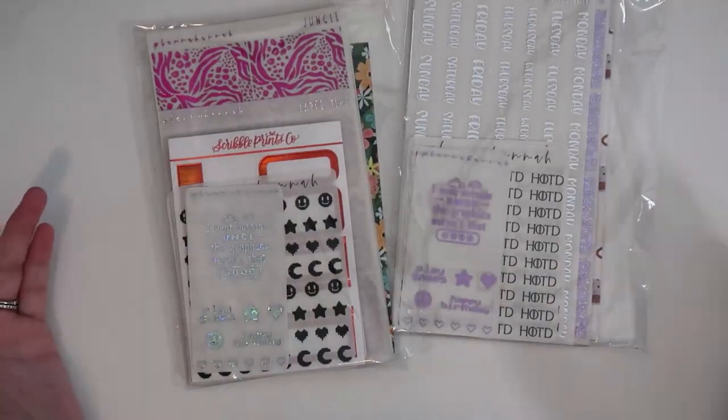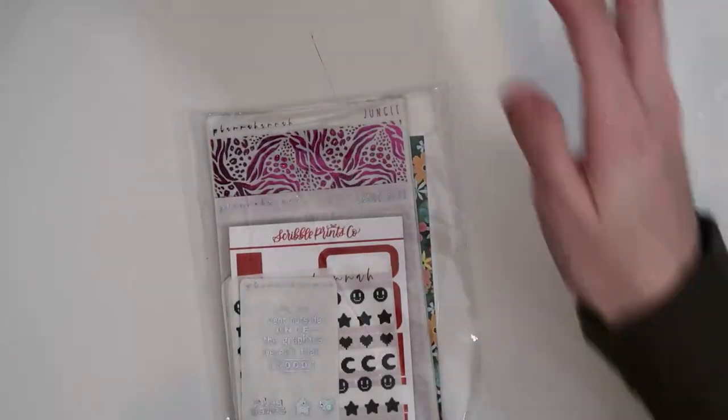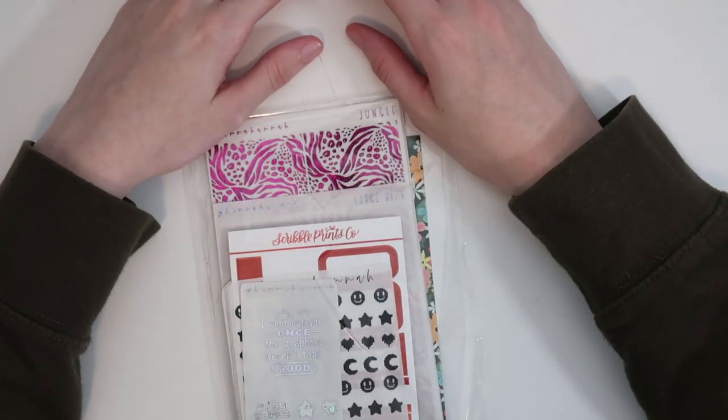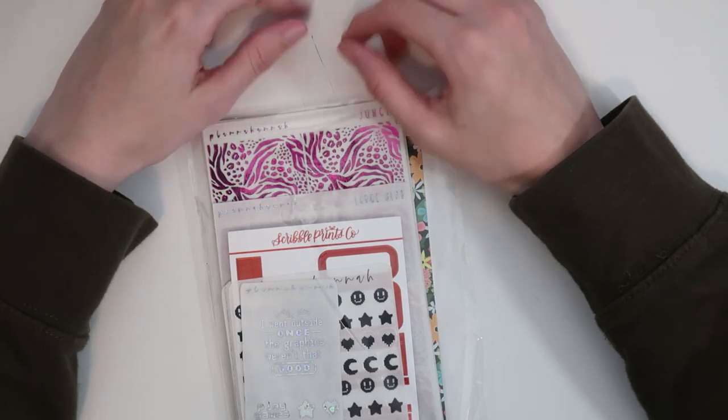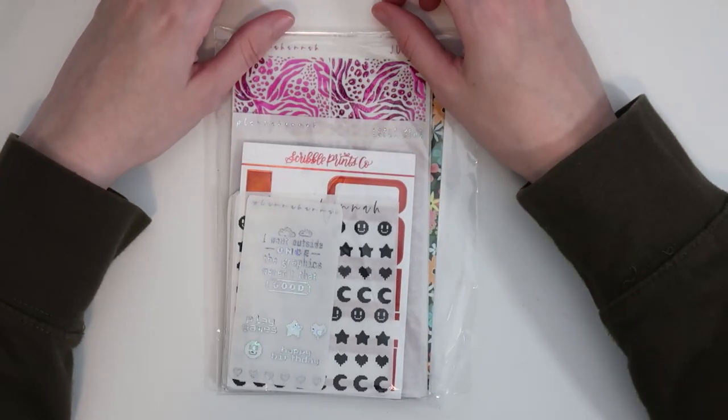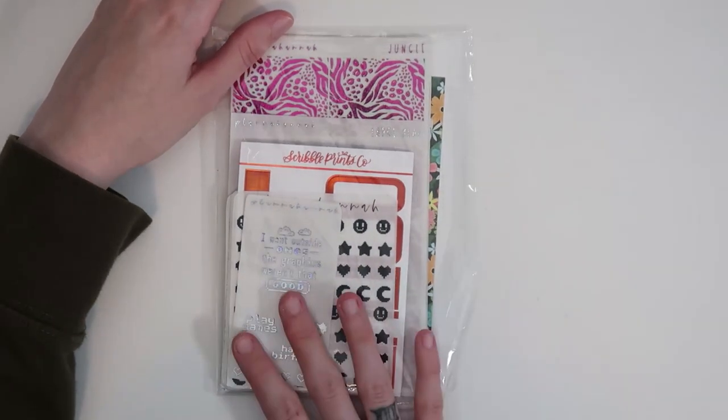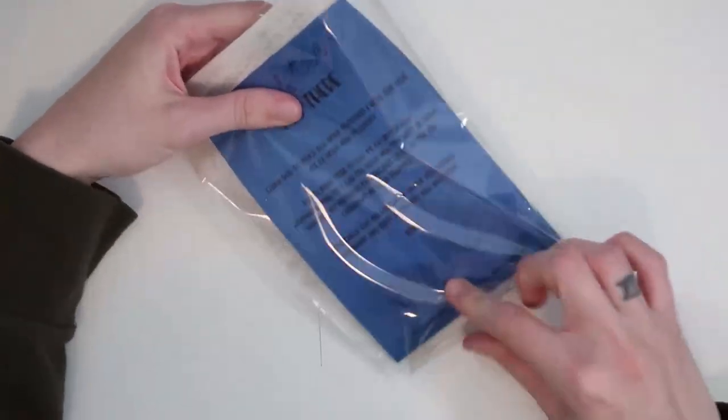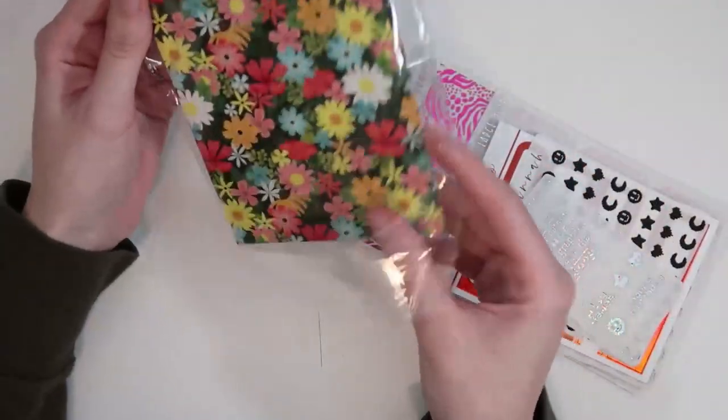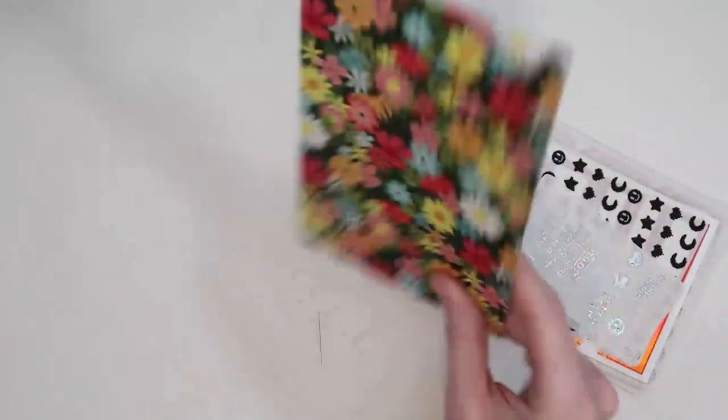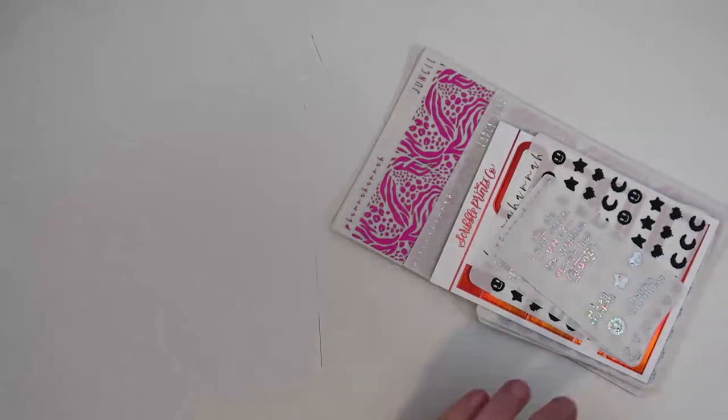Then next up, I have a couple of Planahana orders, which I am so excited about. I've basically just been keeping a running cart. And whenever I feel like my cart's too big, I check out. I do have a code with Hannah. You can use the code FANTASY15 to save 15% and get my freebie, which my new one is in one of these orders. So here's my first order.